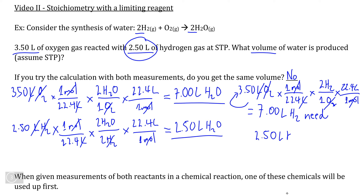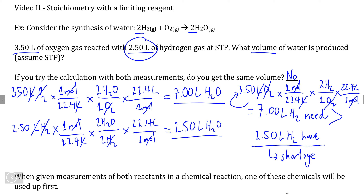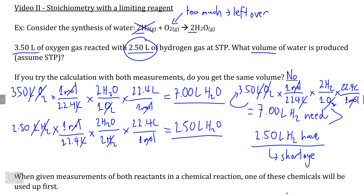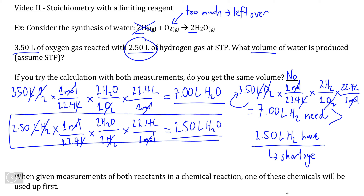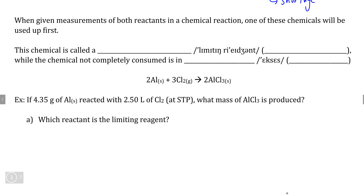If we compare this to the measurement we were given, we only have 2.50 liters of hydrogen. What we need is clearly greater than what we have, and therefore we have a shortage of hydrogen. Another way of putting this: if we have a shortage of hydrogen, we have too much oxygen. This means hydrogen is going to be consumed and we'll have leftover oxygen that will not react because there isn't enough hydrogen. Therefore, the calculation using hydrogen as our baseline is the accurate one.